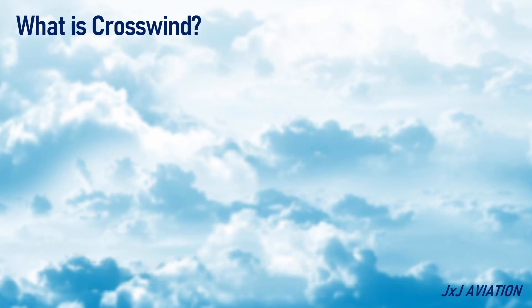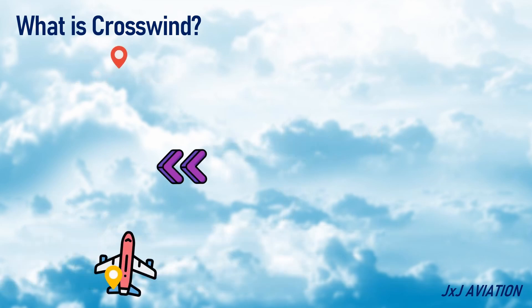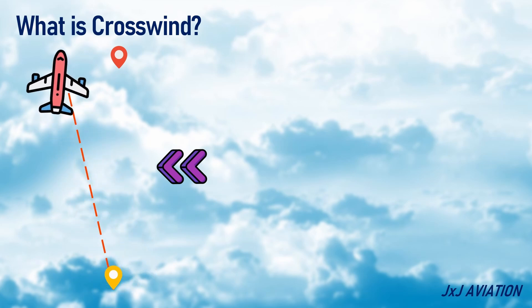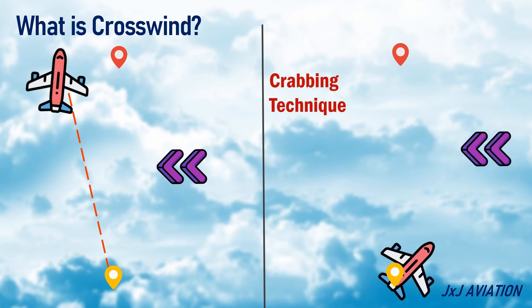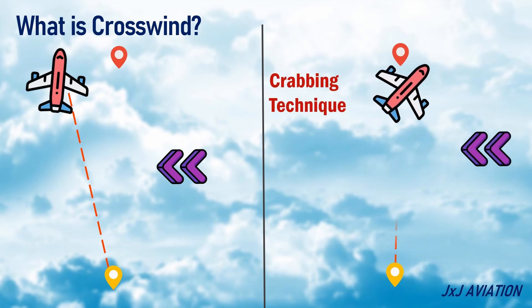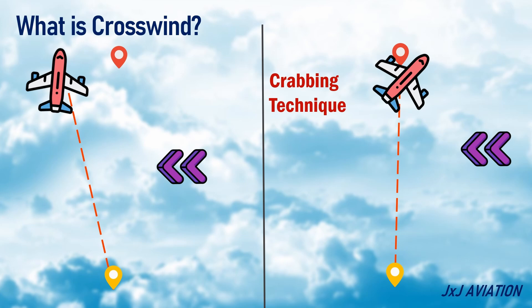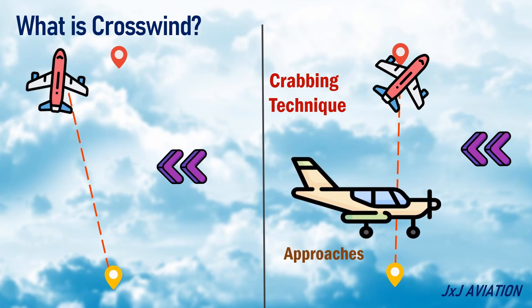During cruise, crosswinds would affect the aircraft's flight path. The crosswind will deflect the aircraft in the direction of the wind. To compensate for the crosswinds, the crabbing technique is used. Here, the aircraft flies sideways on a particular track. This technique is also applied during approaches in severe crosswind conditions.